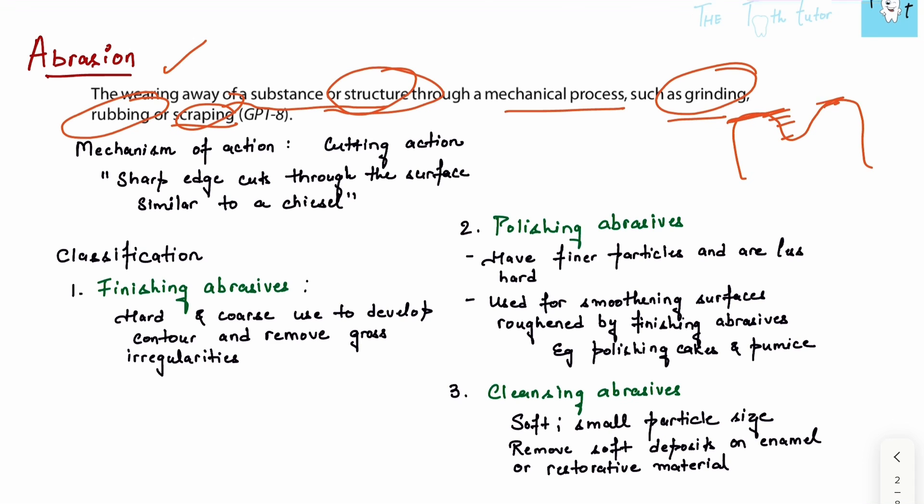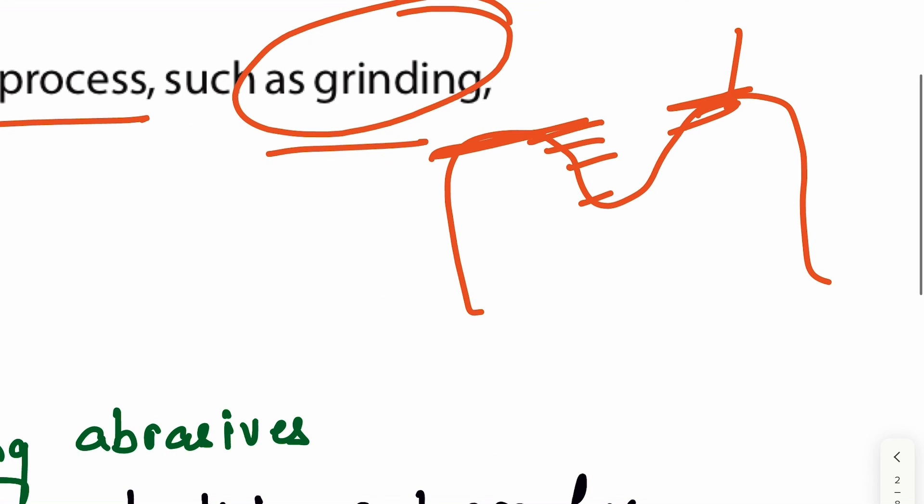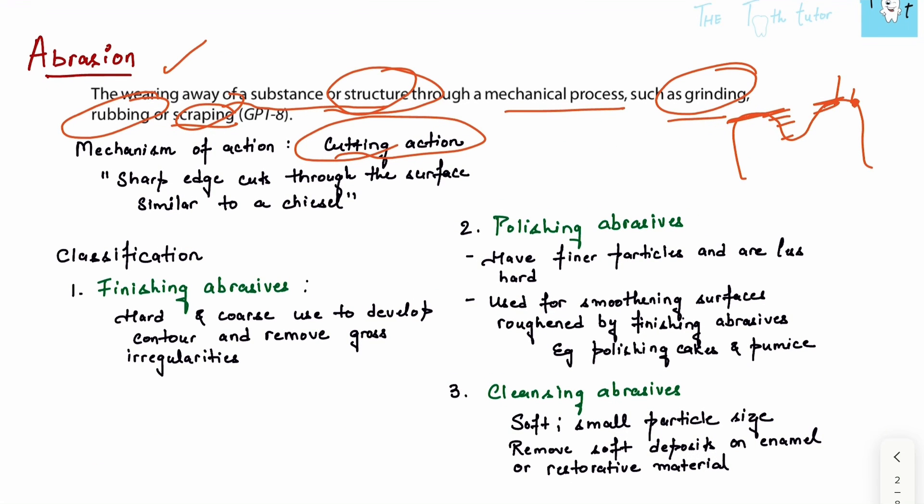What is the mechanism of action? It's cutting action. Whatever abrasion we do, it's using a microstructure. We insert a bur or some abrasive agent, and it will act like a micro chisel. It will remove a small amount of structure, acting as a micro chisel - it's a cutting action.